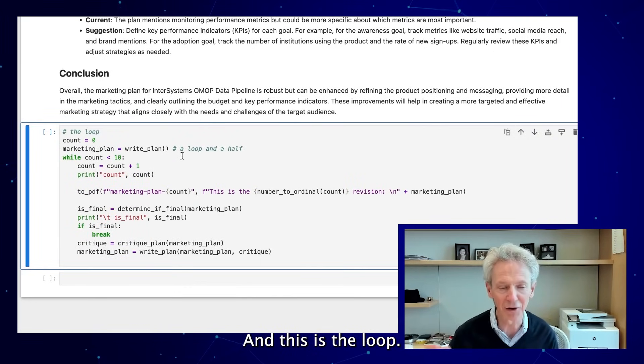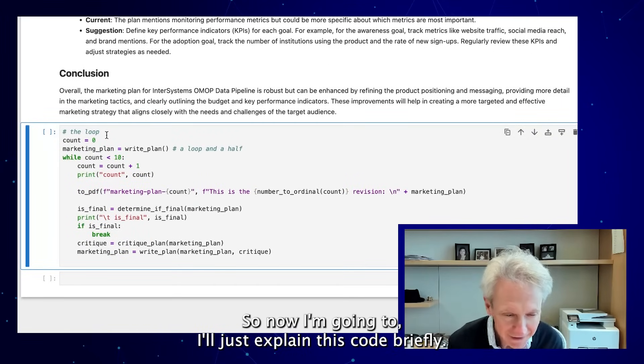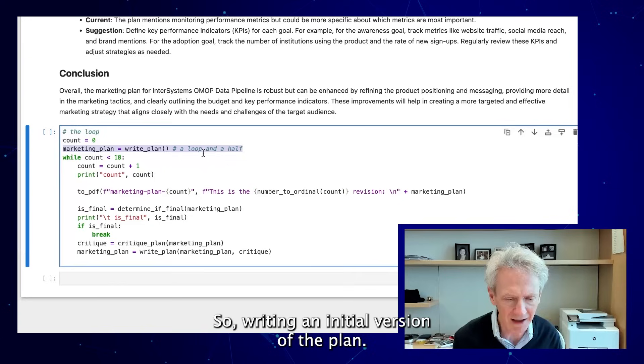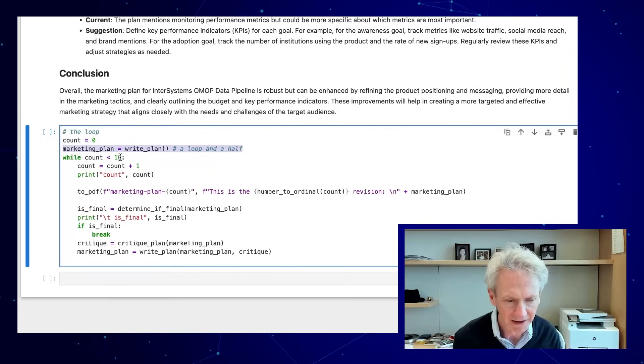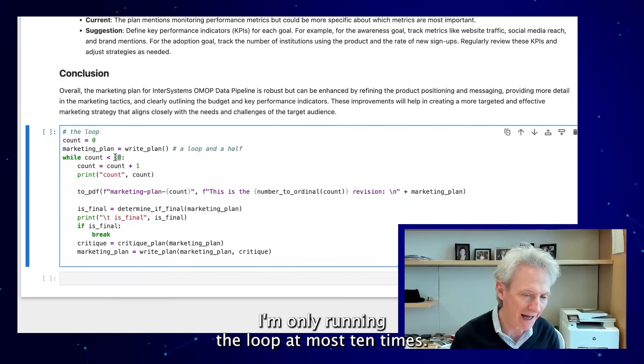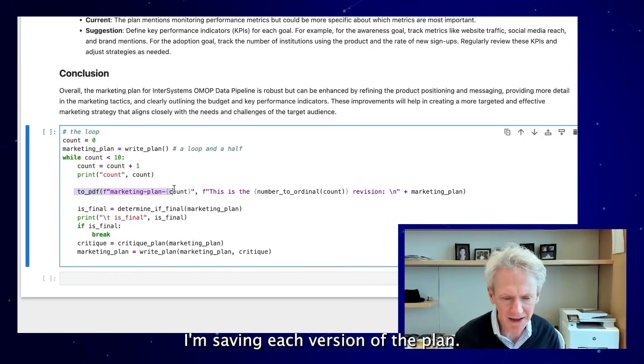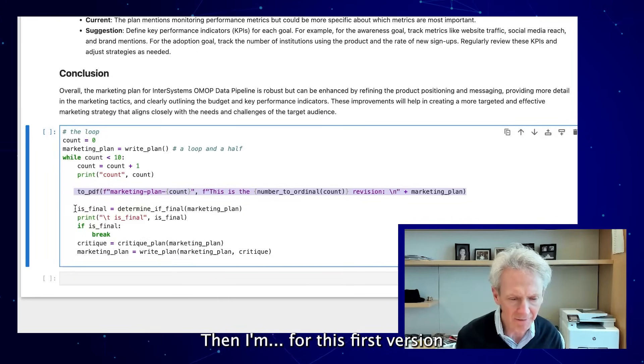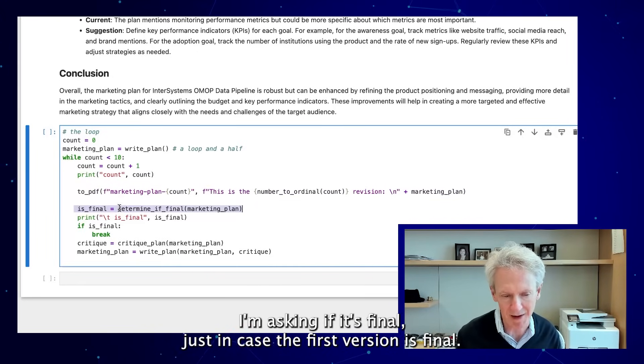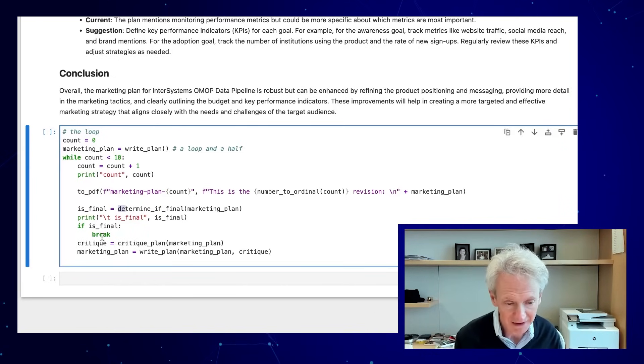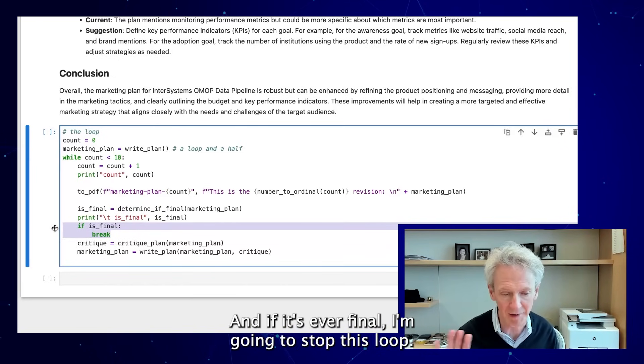This is the loop. I'll just explain this code briefly. I'm writing an initial version of the plan. I'm only running the loop at most 10 times. I'm saving each version of the plan. For this first version, I'm asking if it's final, just in case the first version is final. If it's ever final, I'm going to stop this loop.